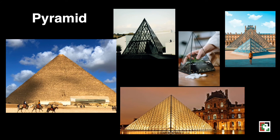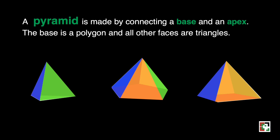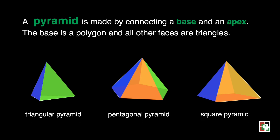Let's move to the pyramid. Have you seen a pyramid? These are some examples of a pyramid. A pyramid is made by connecting a base and an apex. The base is a polygon and all other faces are triangles. We have the triangular pyramid, pentagonal pyramid, and square pyramid. The apex is at the top, and all the faces are triangles.